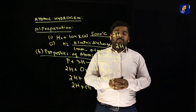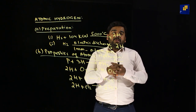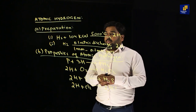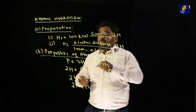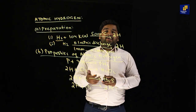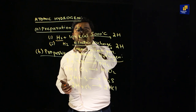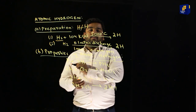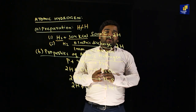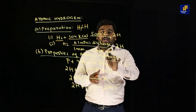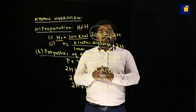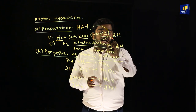We will use molecular hydrogen. To break the bond in molecular hydrogen, we will use 104 kilocalories of energy. If we can take the reaction to 5,000 degrees centigrade, we can convert it to atomic hydrogen.